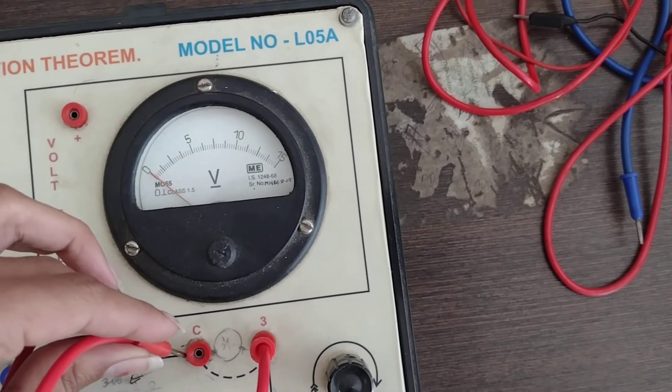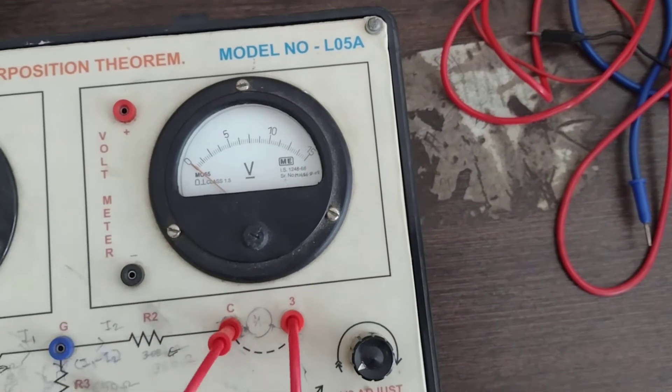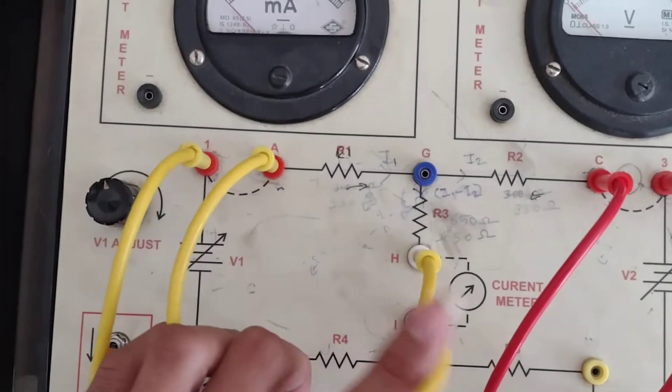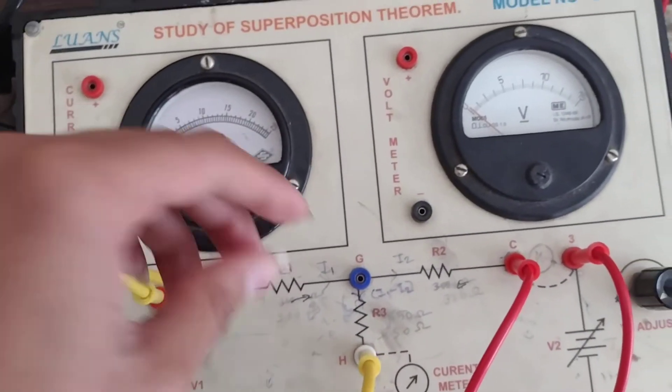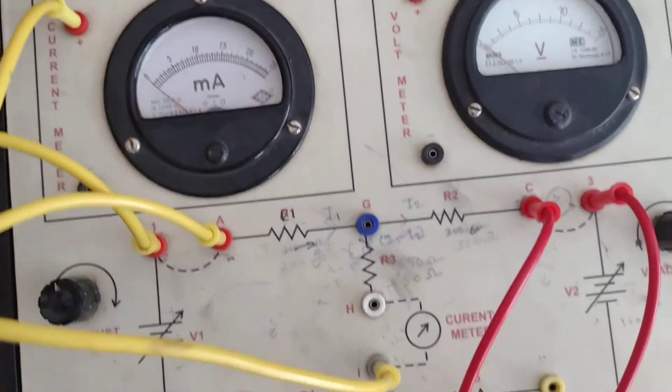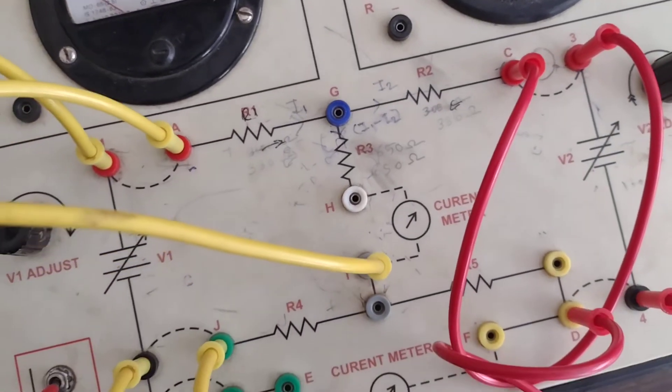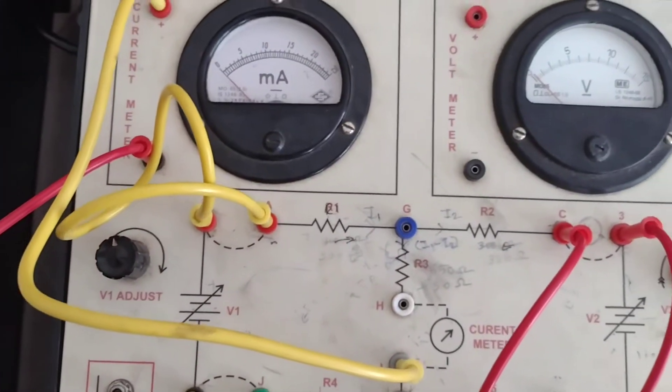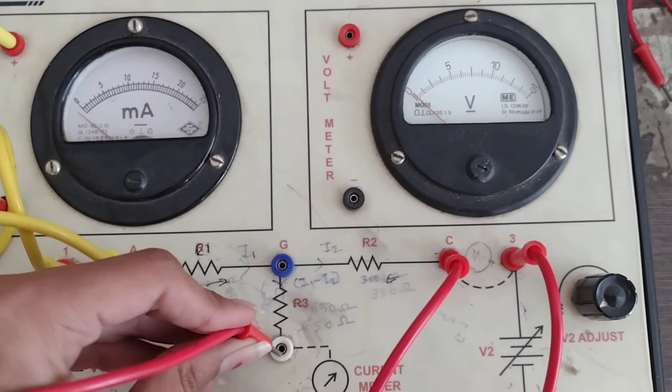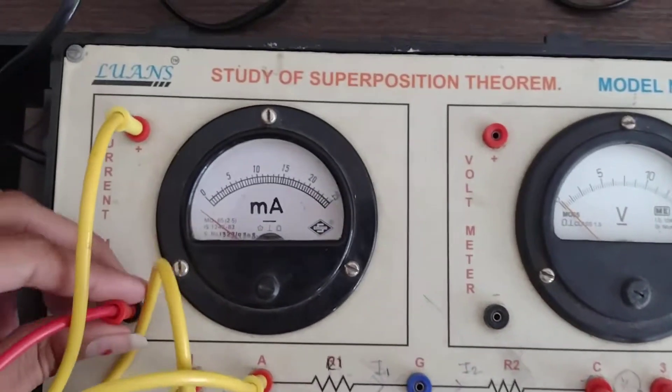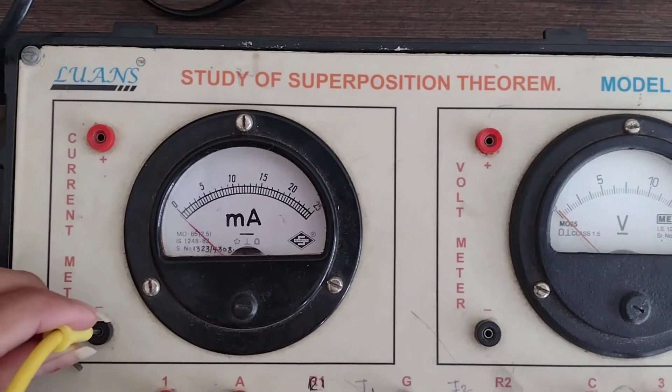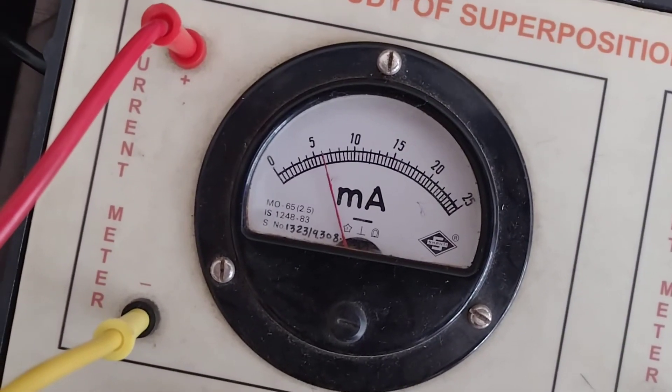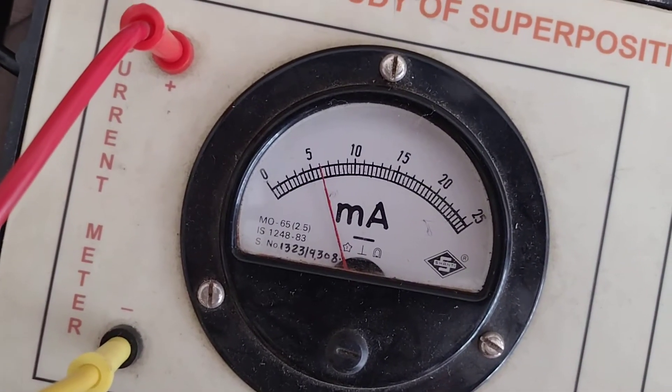Now we measure the current. We measure the total current IA, which is 6 milliamperes.